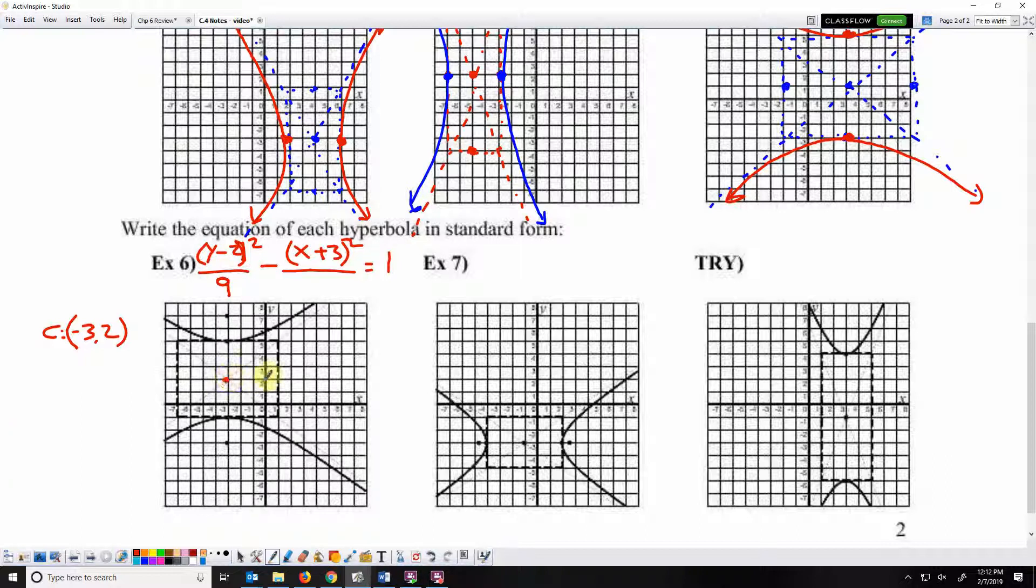The vertical stretch, 1, 2, 3, 3 squared, is 9. The horizontal stretch, 1, 2, 3, 4 squared, is 16.